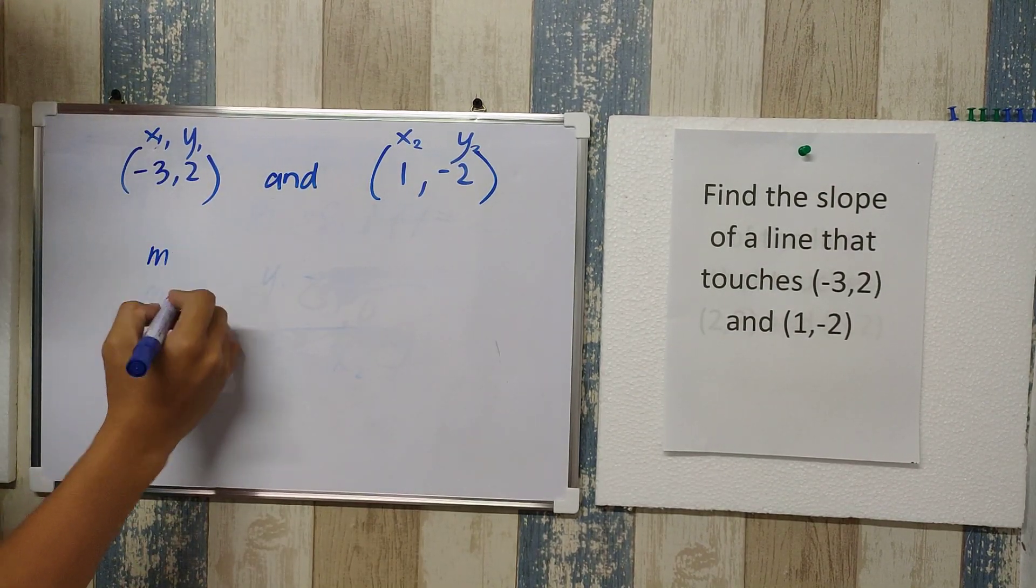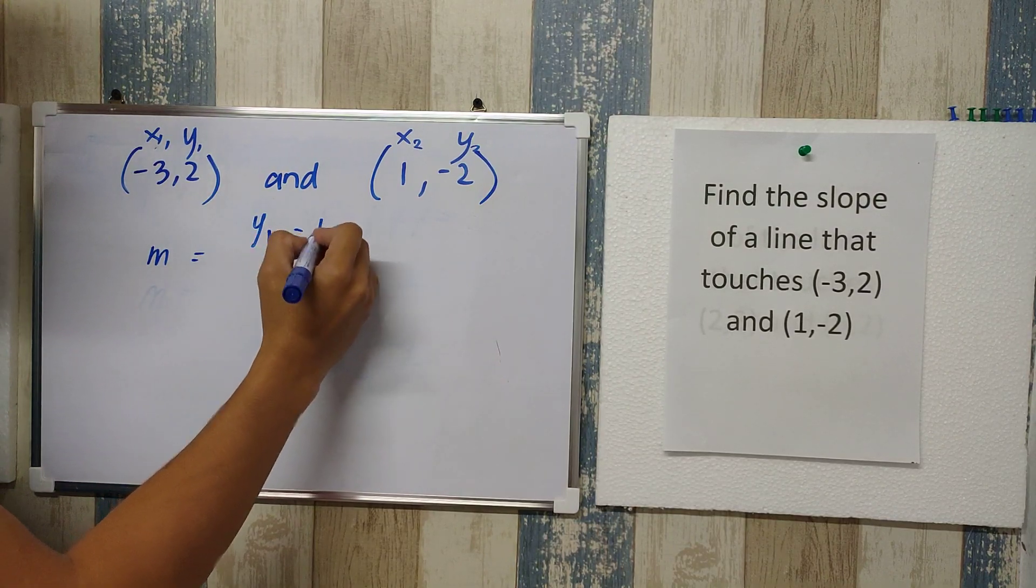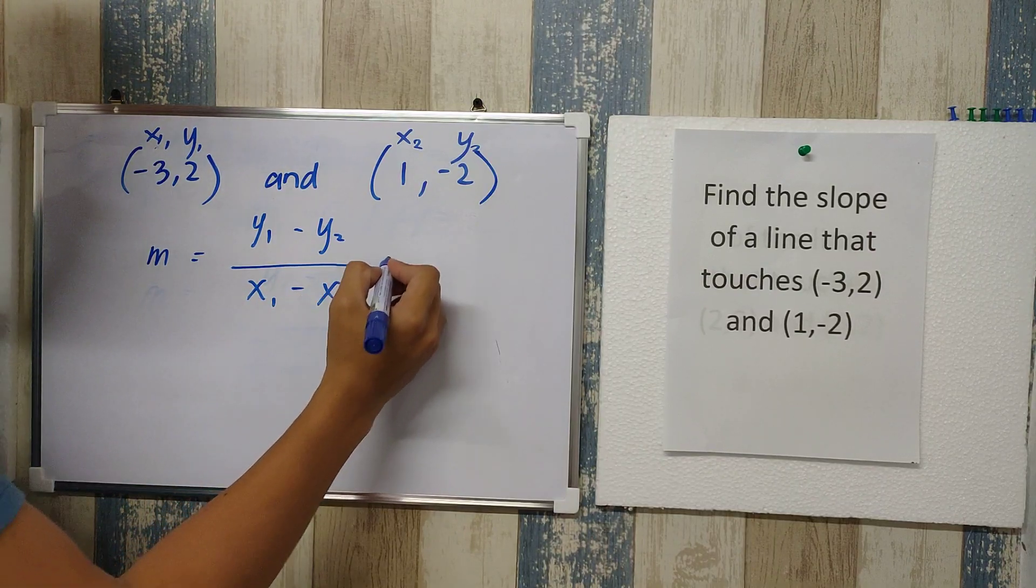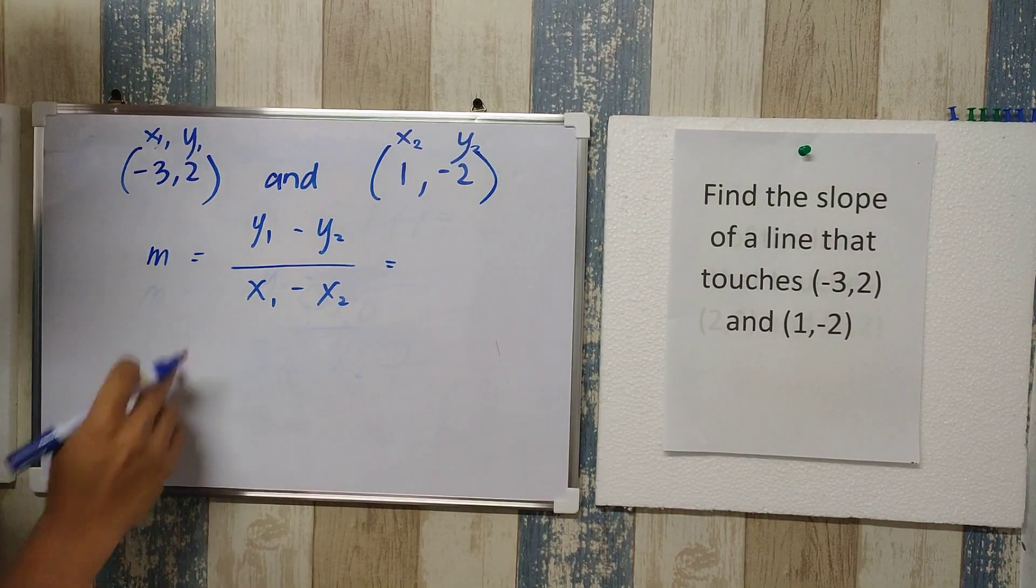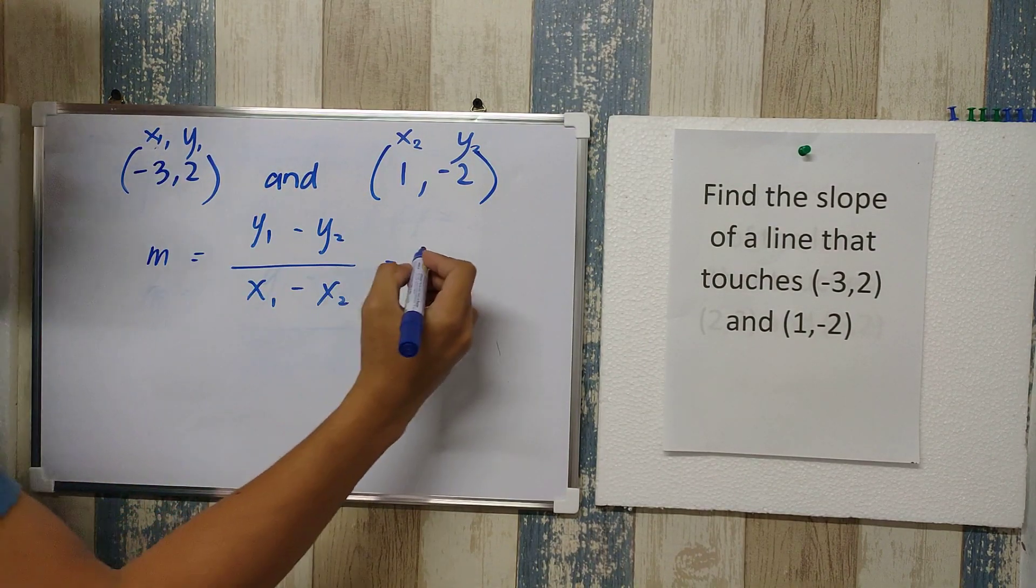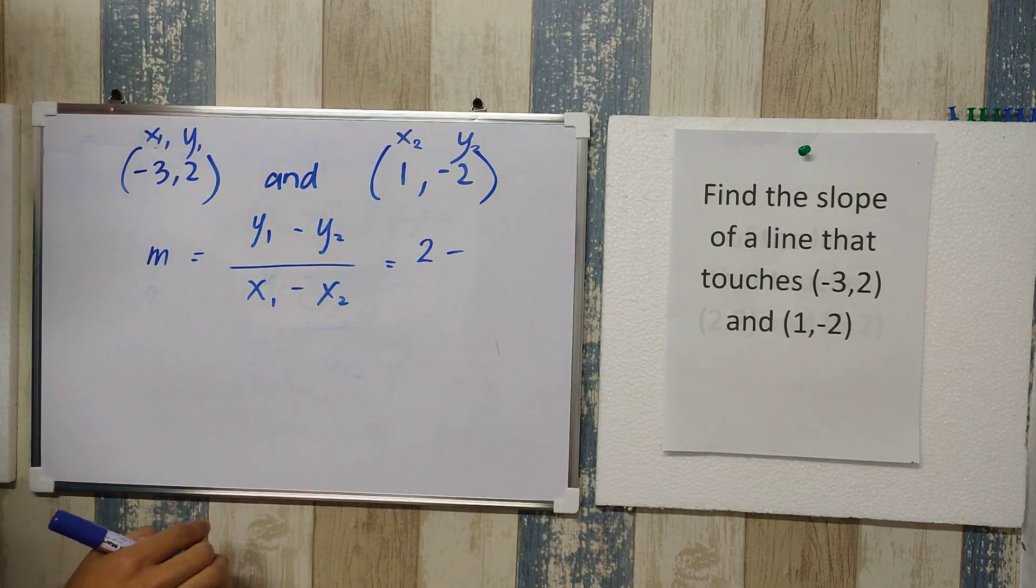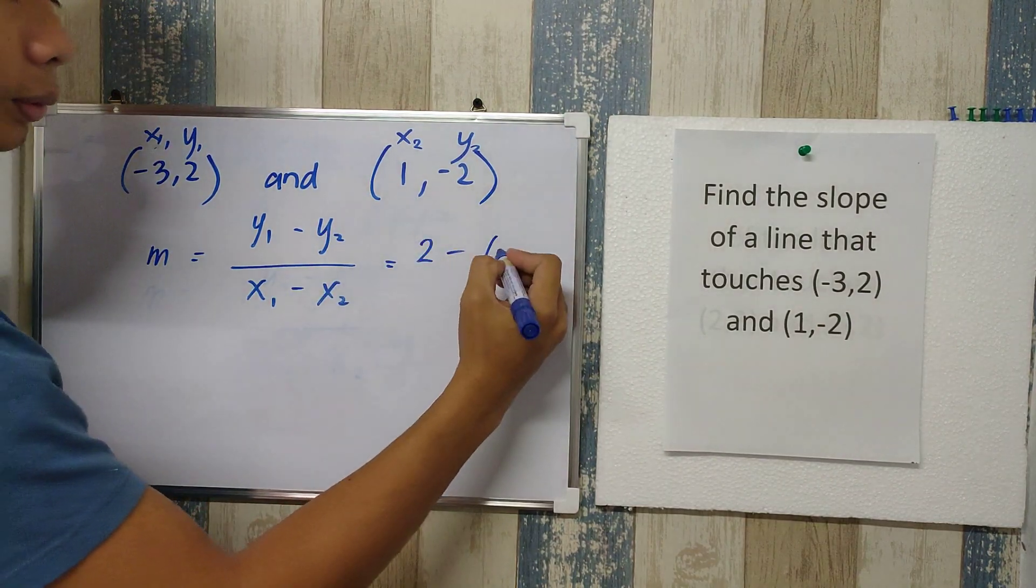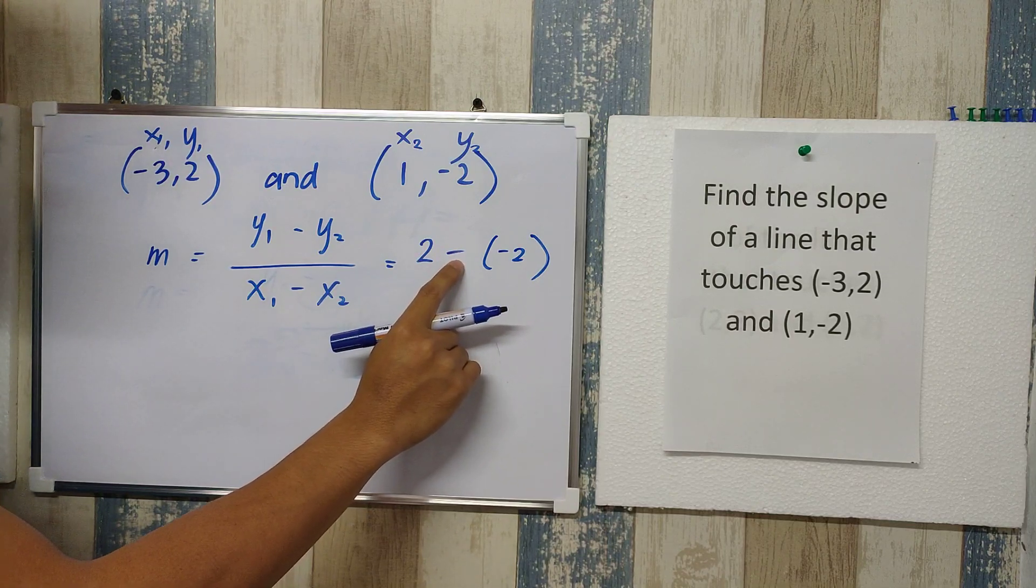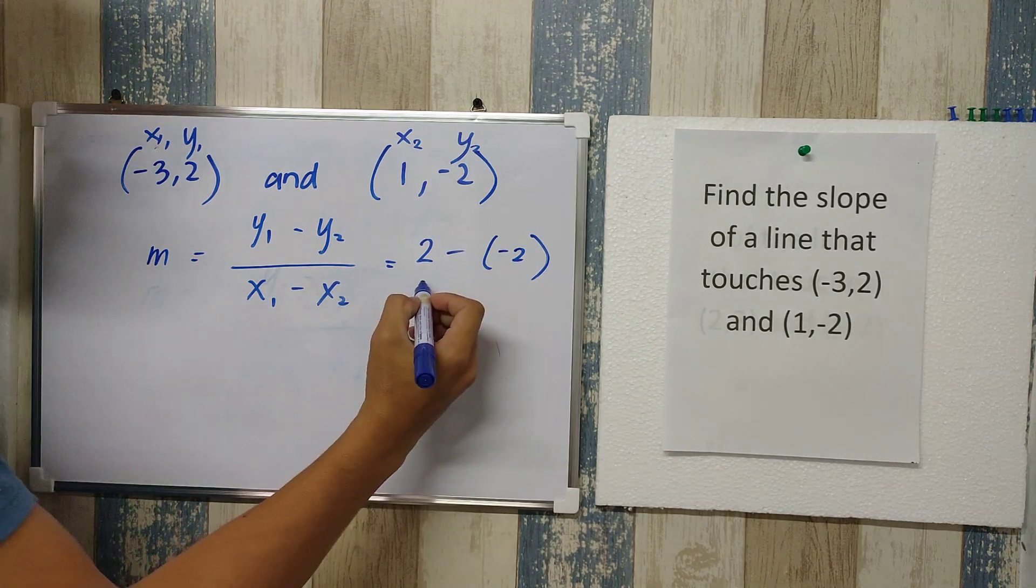If you remember the formula that the slope, which is m, is equal to y sub 1 minus y sub 2 over x sub 1 minus x sub 2, all we have to do is copy everything that we have. Let's start with y sub 1. That's 2. We copy the subtraction sign here, and then y sub 2 is negative 2. You have to be careful with this one. We need to first copy the negative sign, and then whatever y sub 2 is, we copy it after it.